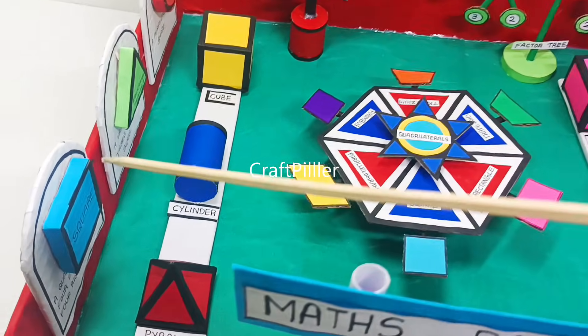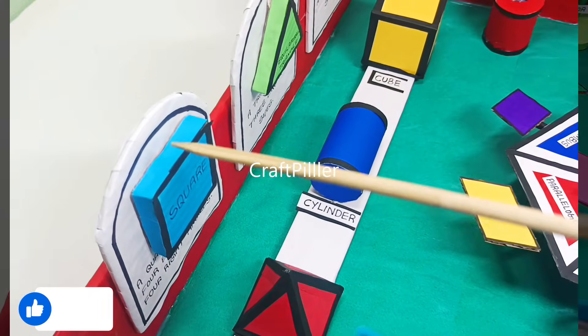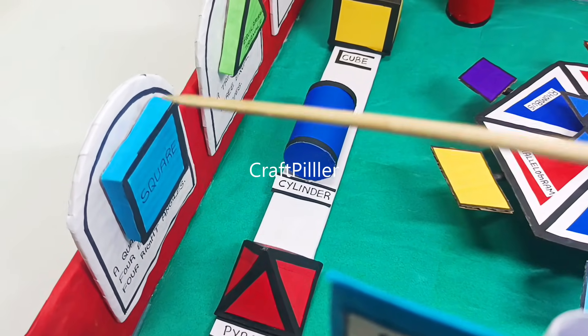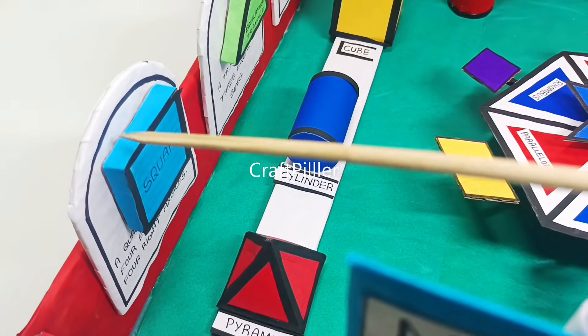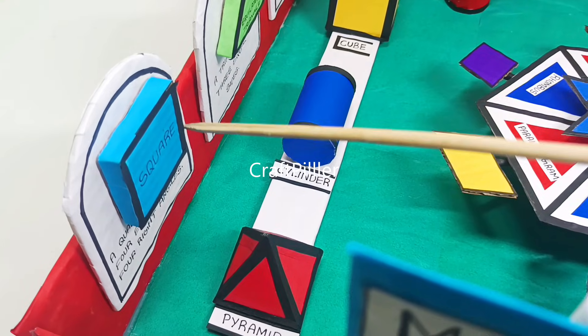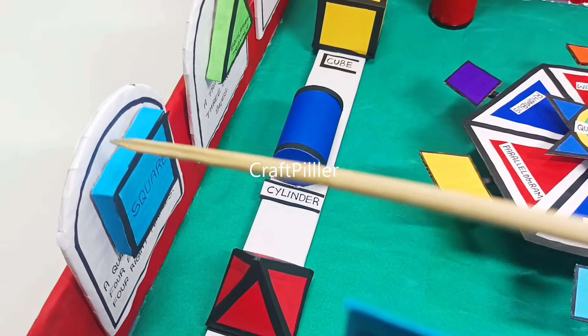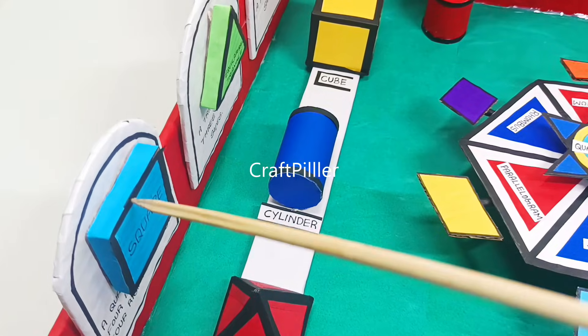First, I'll explain the 2D shapes here. 2D shapes are flat shapes which are two-dimensional, having length and width. The shapes which have length and width we call 2D shapes.